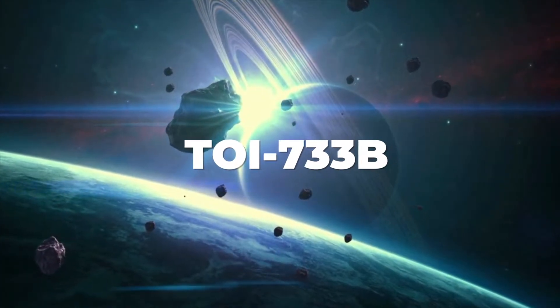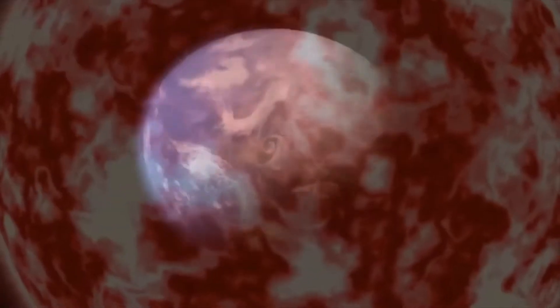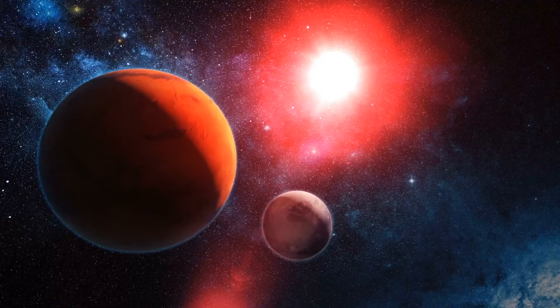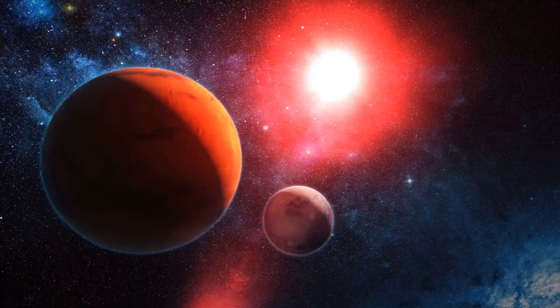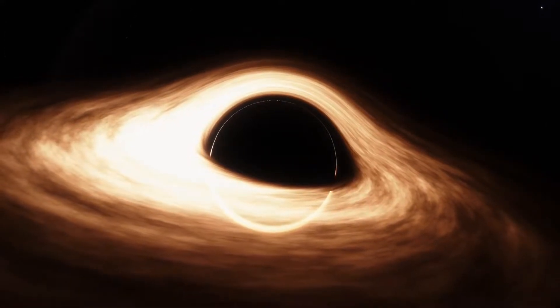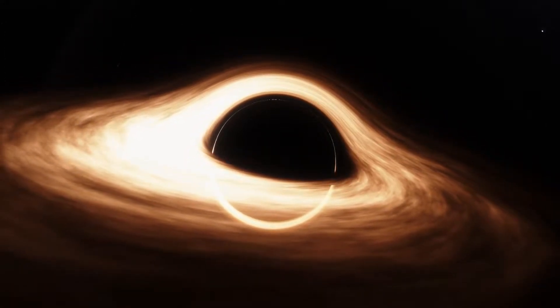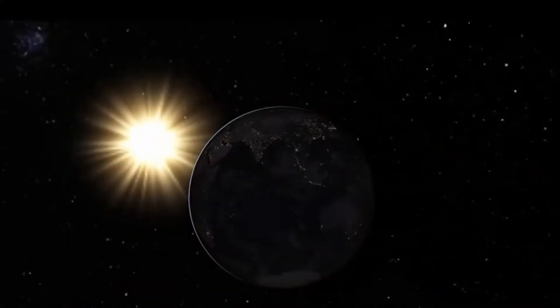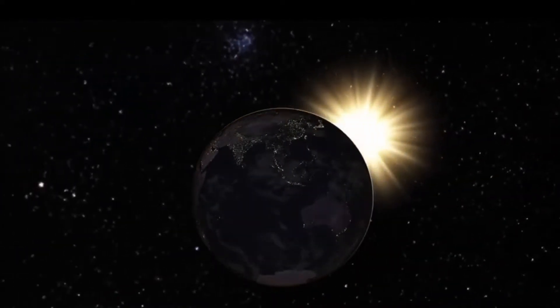Exoplanet TOI-733b. Located in the constellation Dorado approximately 1300 light years from Earth, this exoplanet orbits a dwarf star named TOI-733. It's very close to it and completes its orbit in less than 5 days. Such proximity causes eternal days on one side of the planet and endless nights on the other.